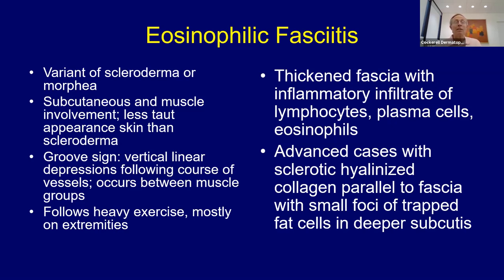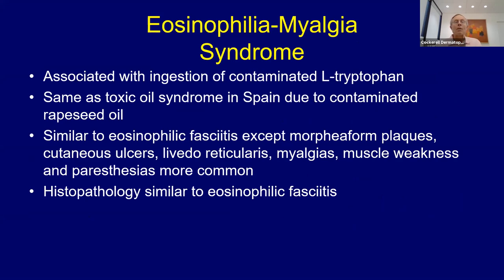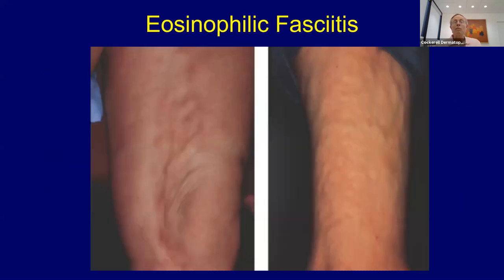Classically you see these linear groove signs that tend to follow the course of blood vessels running between the muscle groups. This can occur in several different settings — it can be due to ingestion of certain toxins, but often follows heavy exercise on the extremities. You get this markedly thickened fascia with an inflammatory infiltrate of lymphocytes, plasma cells, and usually eosinophils. In eosinophilic fasciitis you may not get too many eosinophils in the tissue, but there can be circulating eosinophils — you usually do see them in tissue though. Eosinophilia-myalgia from ingestion of L-tryptophan or toxic rapeseed oil looks very similar to eosinophilic fasciitis.